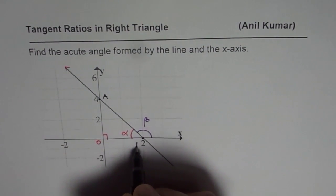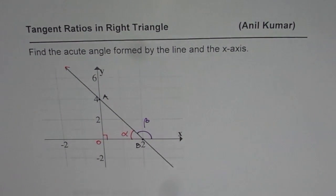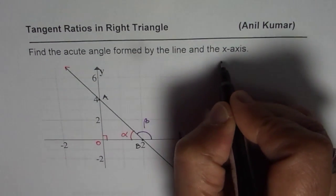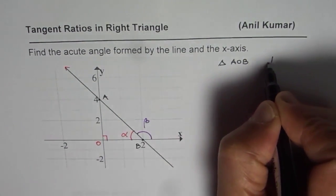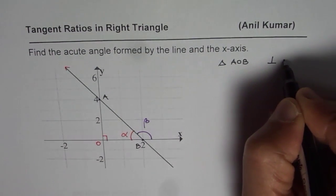O is the center and let B be the point at 2, the x-intercept. So we are considering triangle AOB and this one is a right triangle.